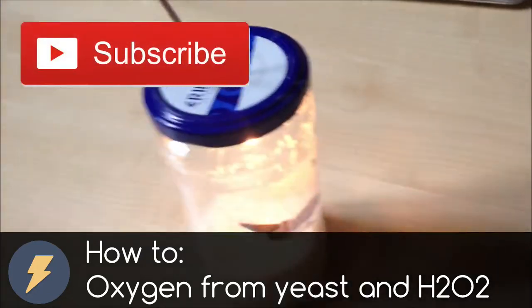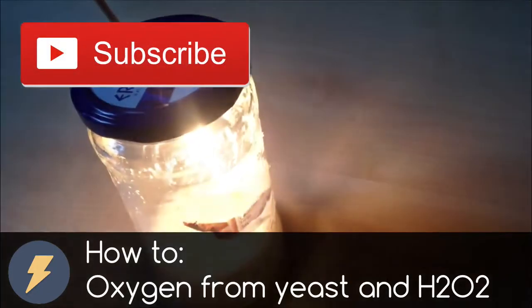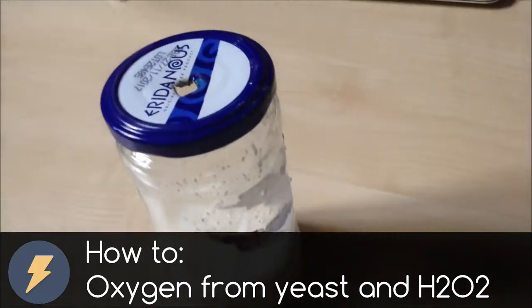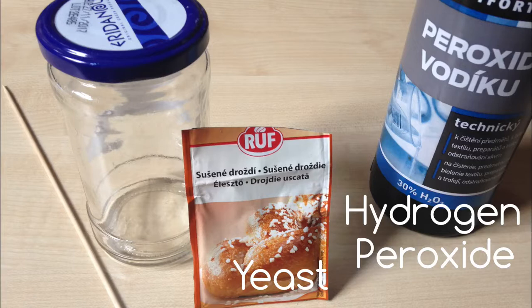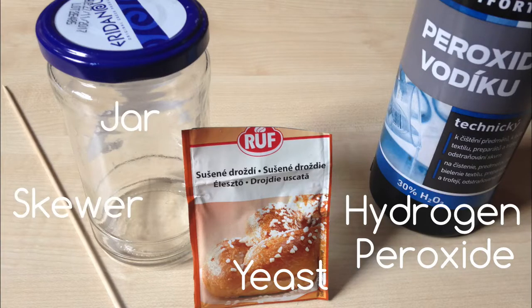Subscribe to this channel now if you don't want to miss any future video. For today's oxygen making, we need yeast, 3% concentrated hydrogen peroxide, a jar, and a skewer.